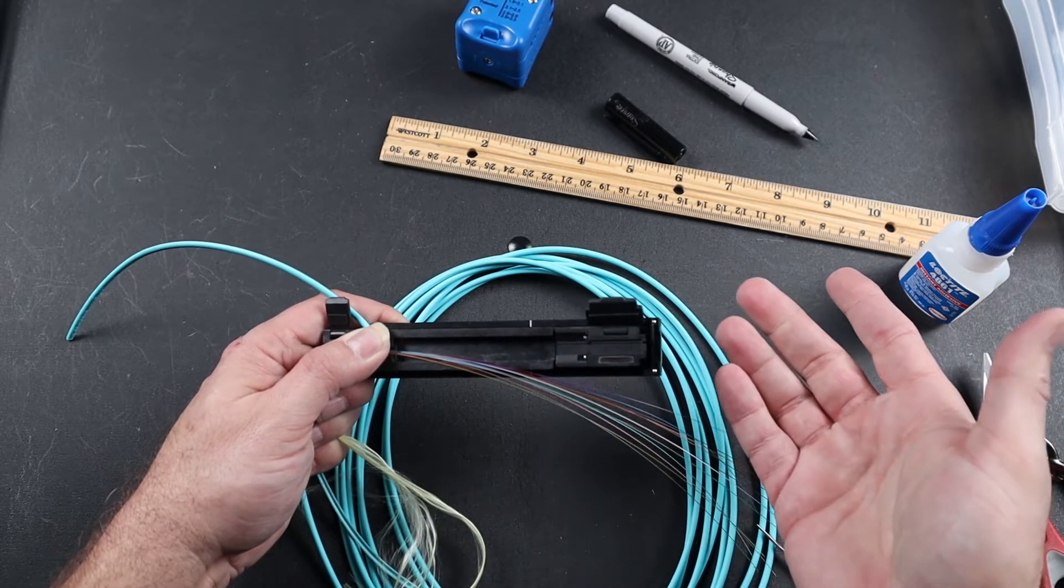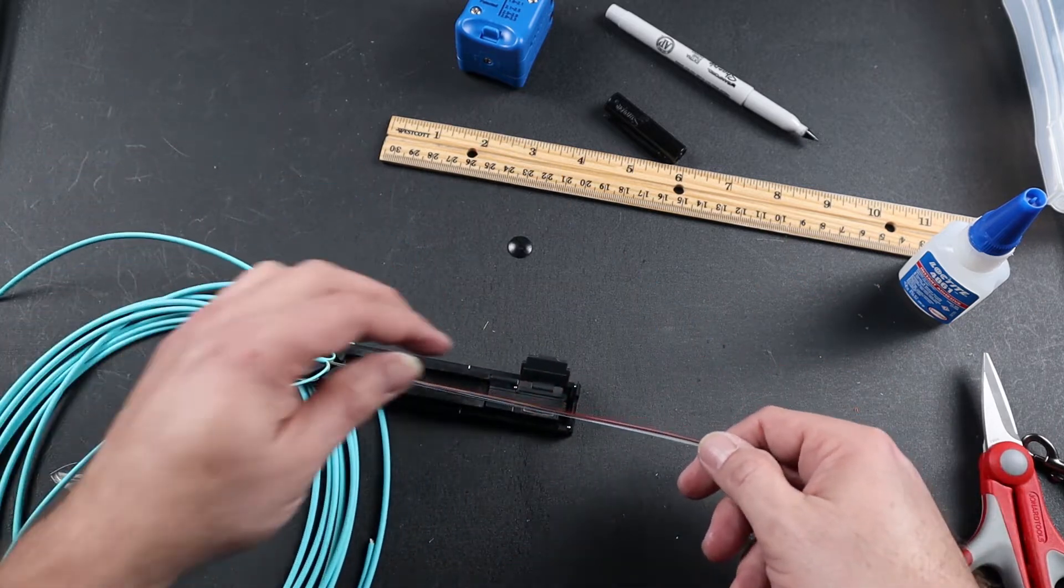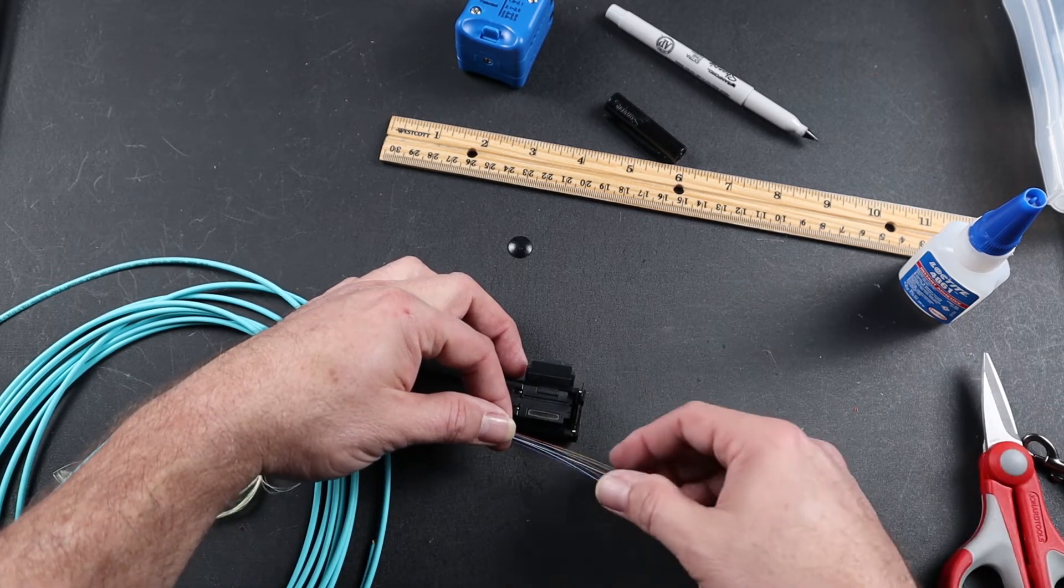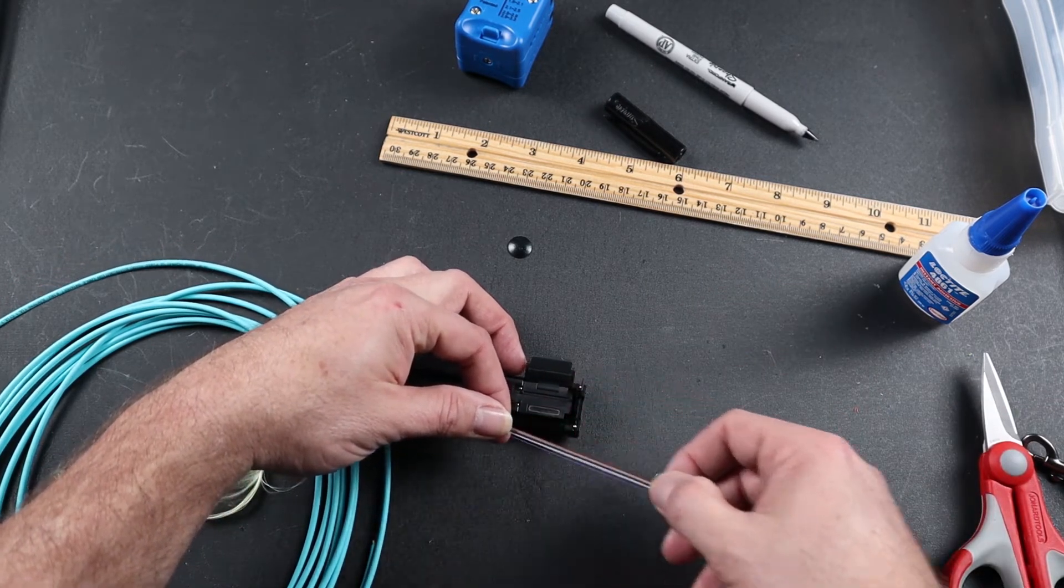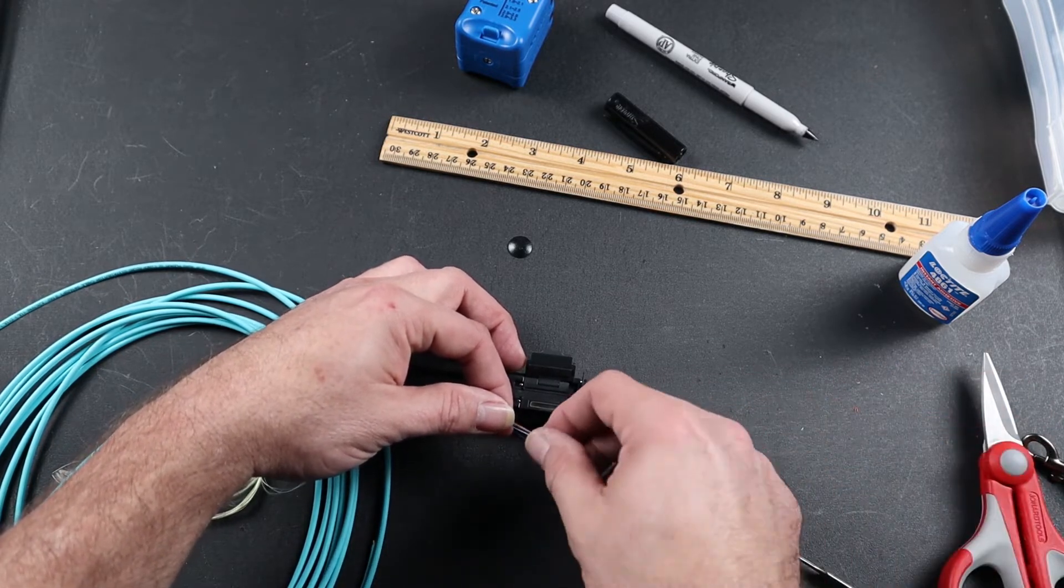Next, open the door of your holder and take your 12 fibers and place them into your fiber stacker in reverse order according to the fiber code.